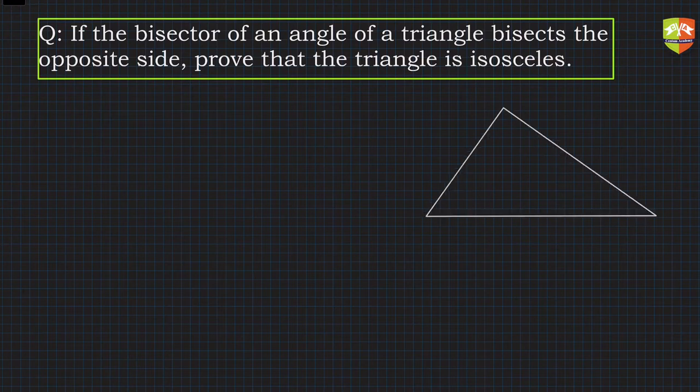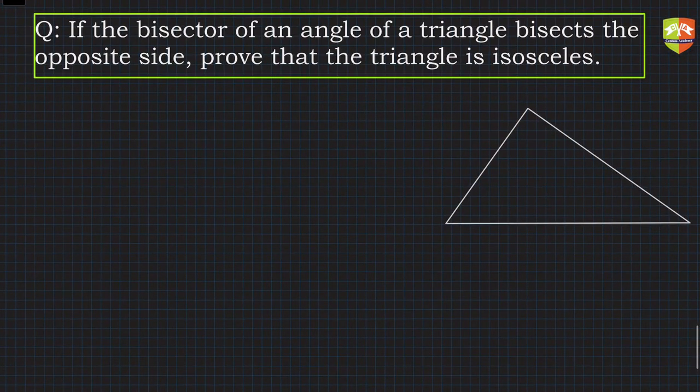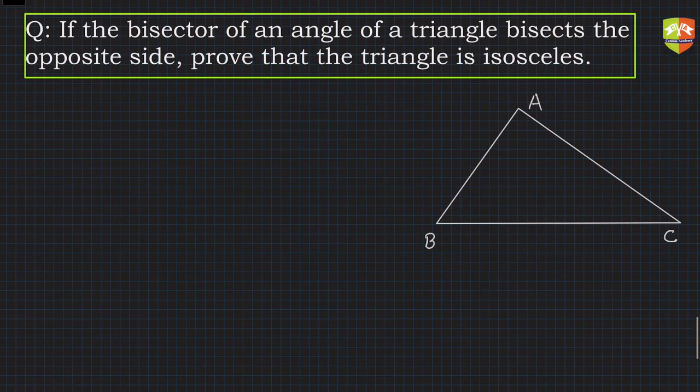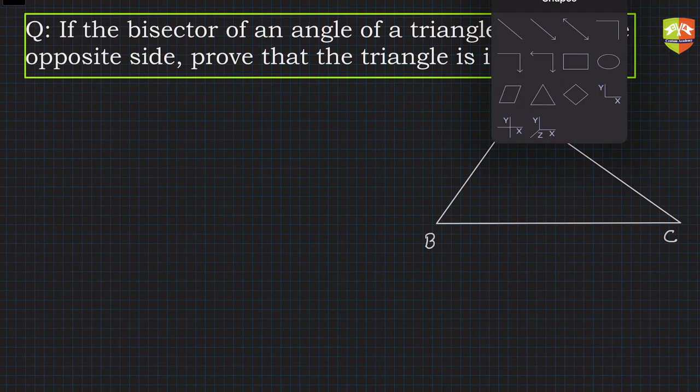Let us name this triangle. So A, B, C. Now what does it say? If the bisector of an angle, let's say we draw a bisector of angle BAC.